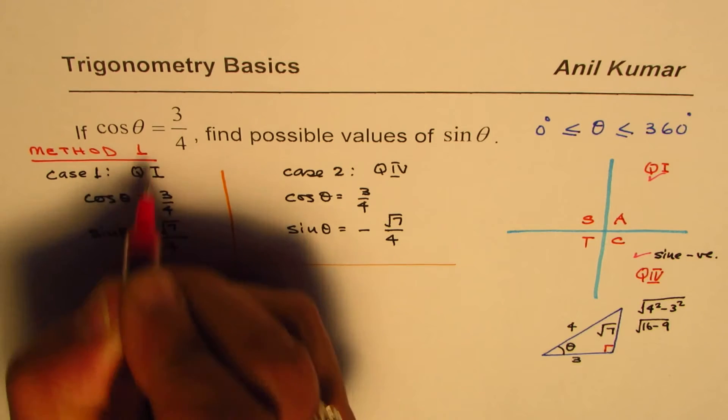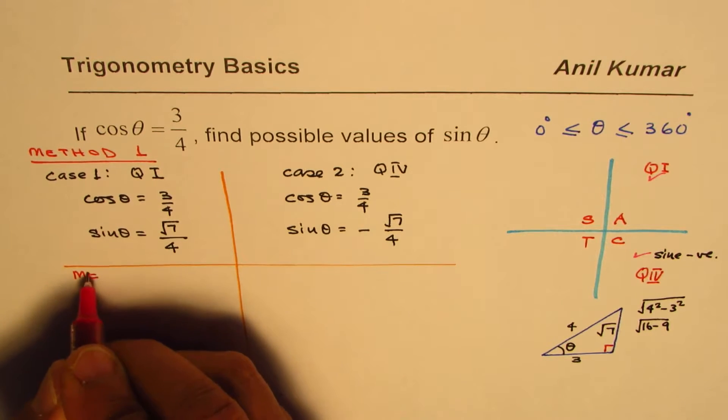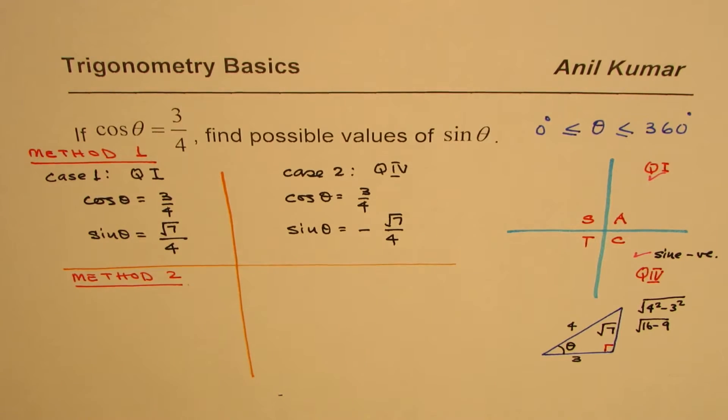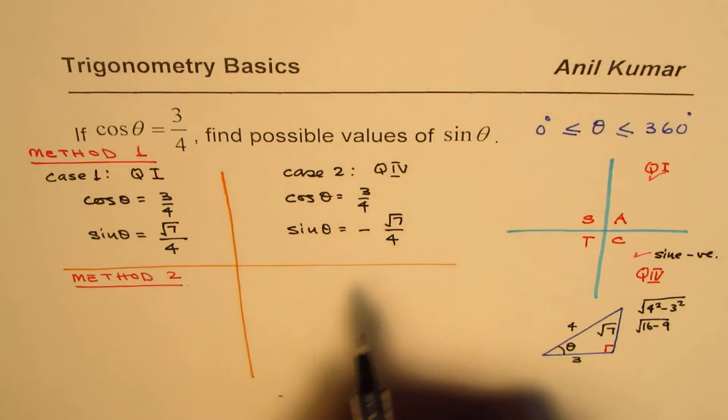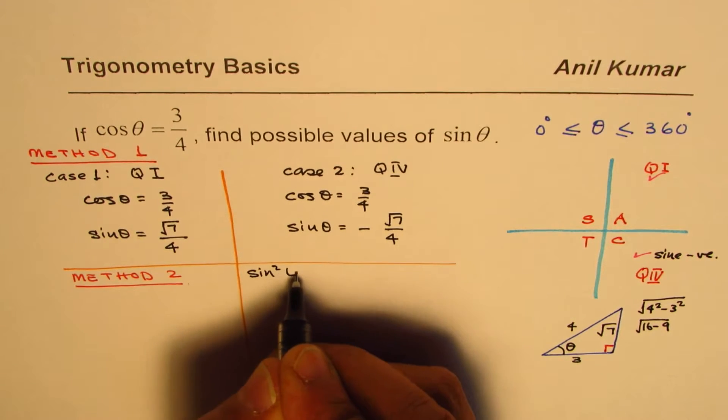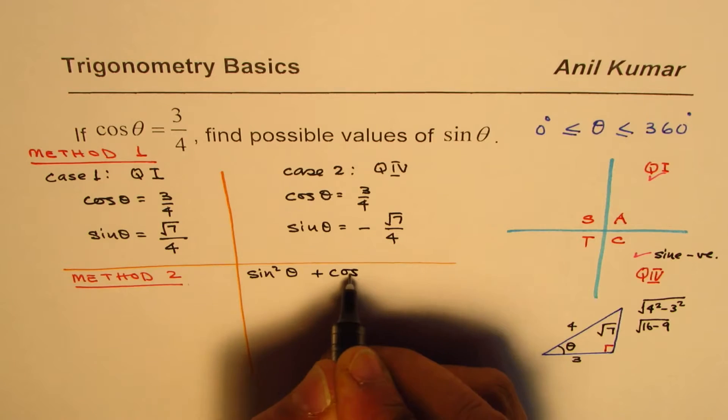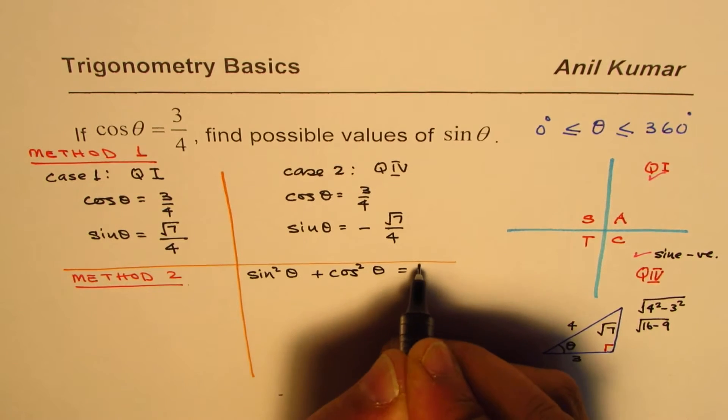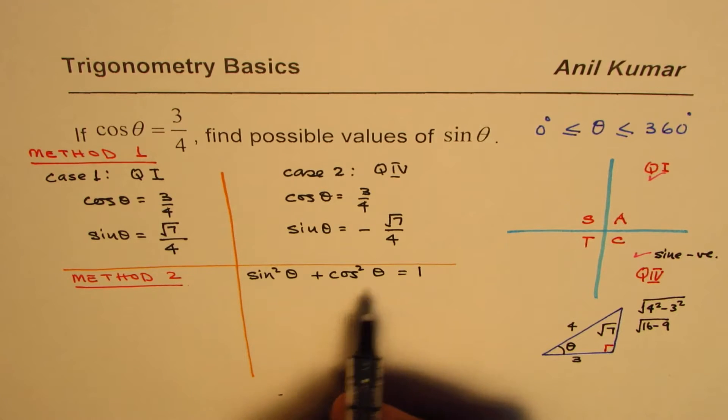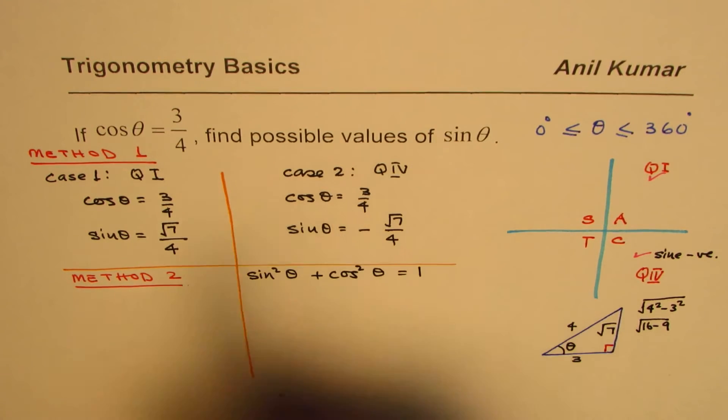Method 1. Let me now discuss another method to do the same thing, and that is by using Pythagorean trigonometric identity, which is sin square theta plus cos square theta is equal to 1.